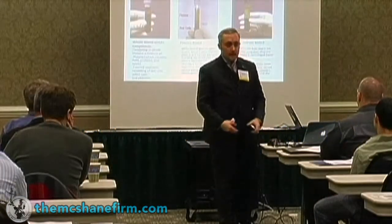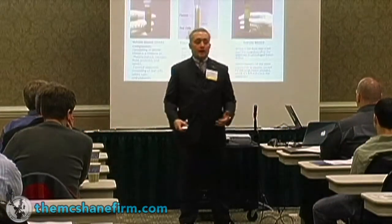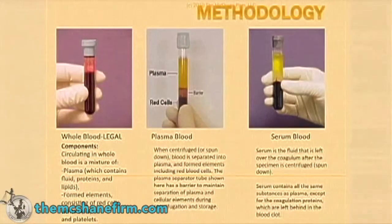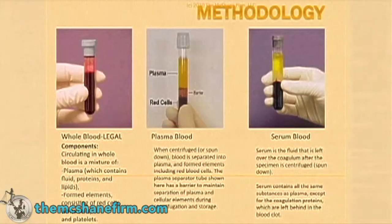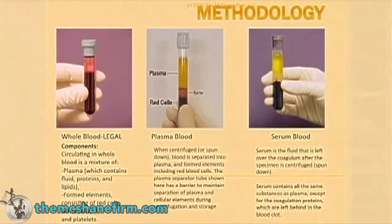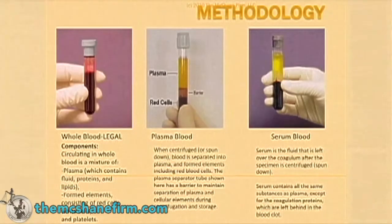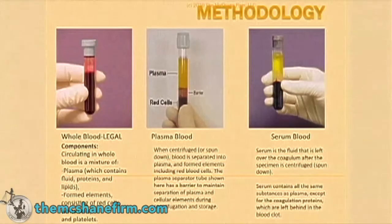To really understand what we're talking about here, you have to understand a little bit of science. The distinction up here is between whole blood, plasma blood, and serum blood. Over here is whole blood — basically what came out of your arm and got into the tube. Two other types are plasma blood and serum blood.